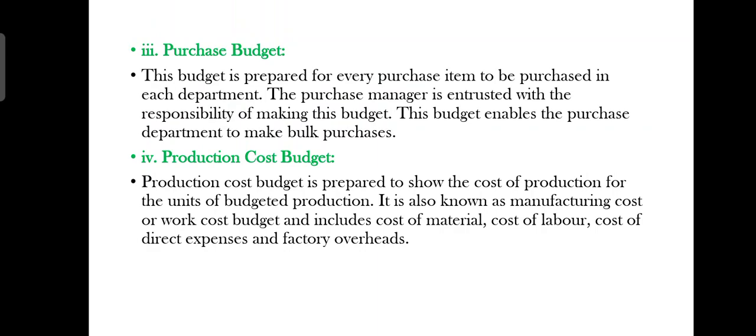The production cost budget is prepared to show the cost of production for the units of budgeted production. It is also known as the manufacturing cost or work cost budget and includes cost of material, cost of labor, cost of direct expenses, and factory overhead. In this budget we predict the cost for all the units of production that have been decided, covering material, labour, and factory overheads.